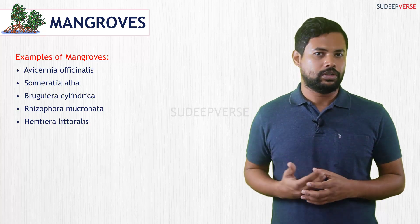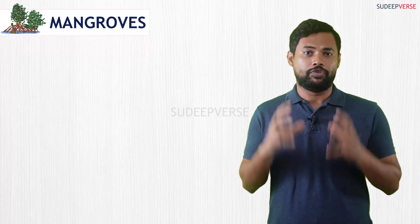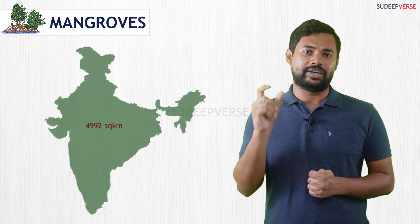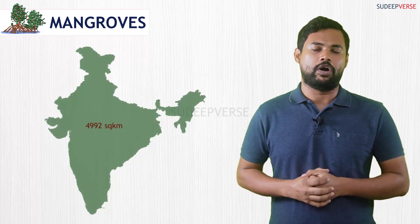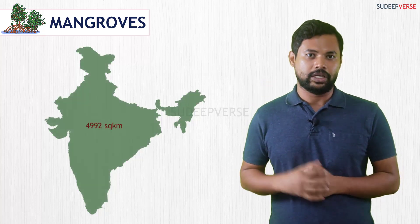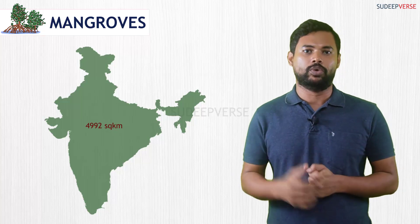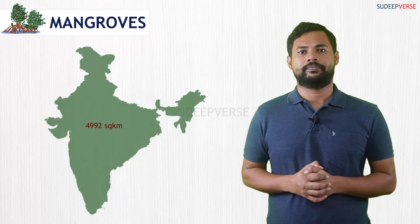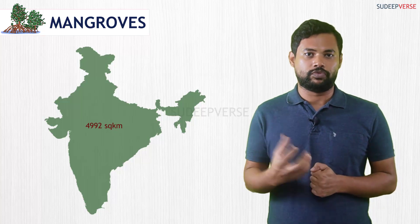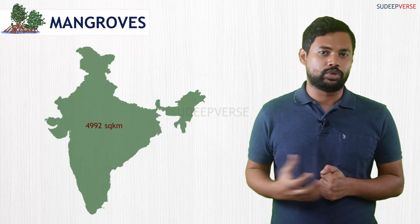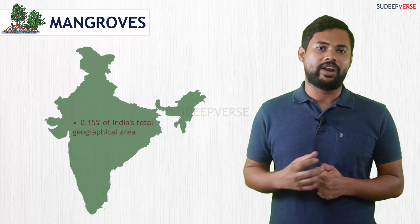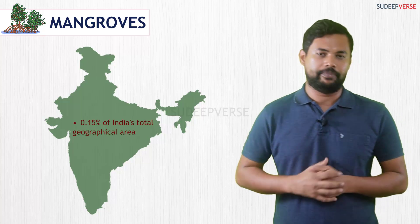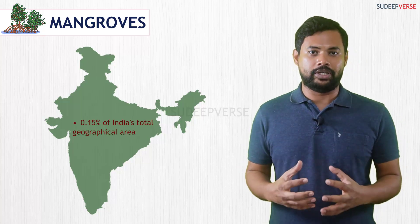In India, around 4,992 square kilometers of area is covered with mangroves, according to the Indian State Forest Report 2021. This constitutes 0.15 percent of the total geographical area of India, and we have seen a rise in mangrove cover.